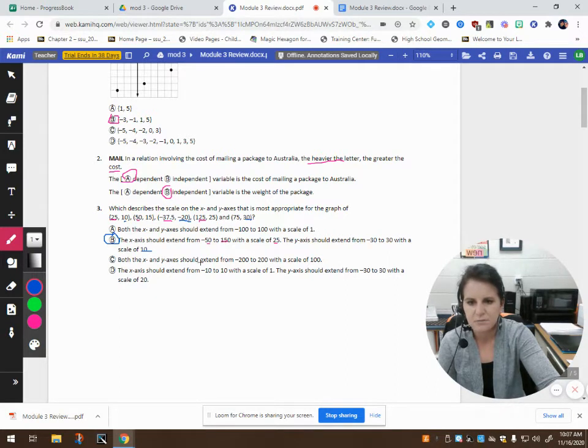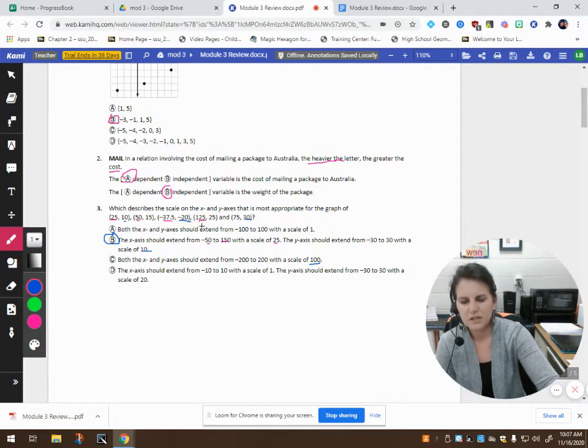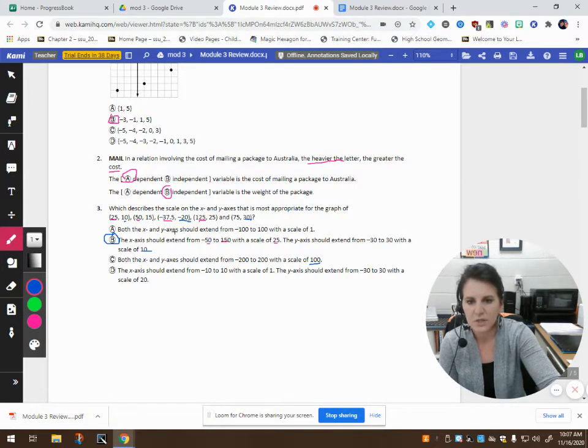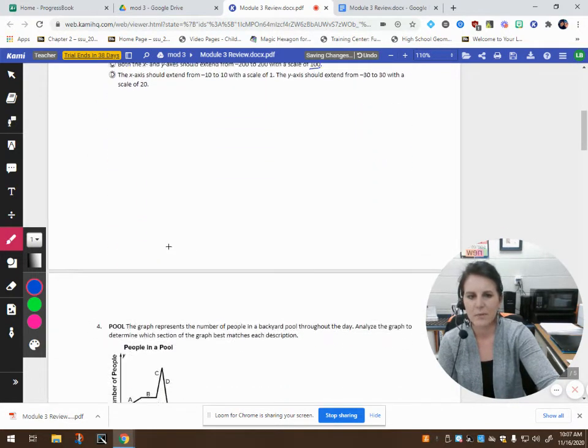But let's just double check. It says both the x and the y-axis should extend from negative 200 to 200 with a scale of 100. That's not very good. It'd be very hard to be accurate. This is much more accurate. Going from negative 150 up to 125 in increments of 25, you're going to be able to get much closer to your values instead of 100. The x-axis should extend from negative 10 to 10. That's not going to help because we need to go from negative 37 all the way up to 125. So, looks like B is our best answer choice.